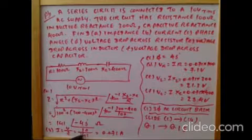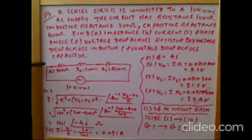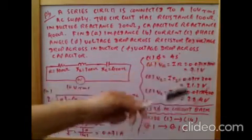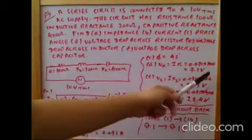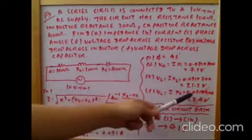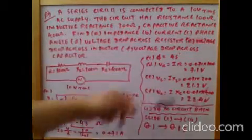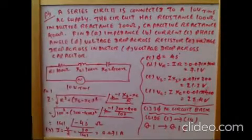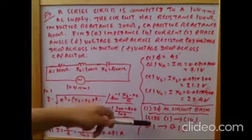Substituting R = 100 Ω, XL = 300 Ω, XC = 400 Ω: Z = 141.4 Ω at −45°. Current I = V / Z = 100 / 141.4 = 0.071 A. Voltage across resistor VR = I × R = 0.071 × 100 = 7.1 V. Voltage across inductor VL = I × XL = 0.071 × 300 = 21.3 V. Voltage across capacitor VC = I × XC = 0.071 × 400 = 28.4 V. Do the exercises on series RLC circuits.